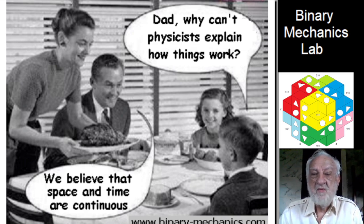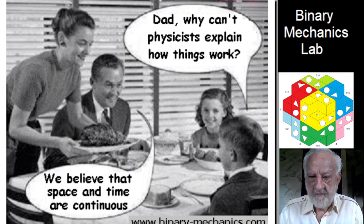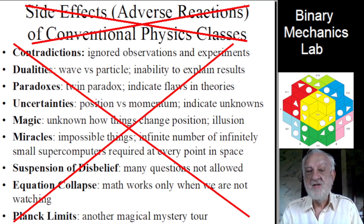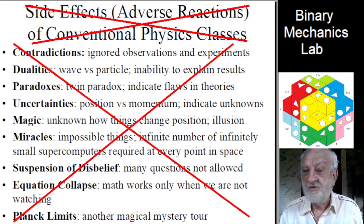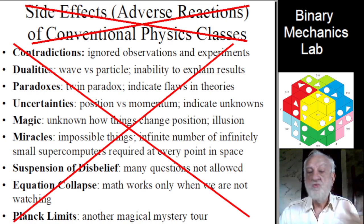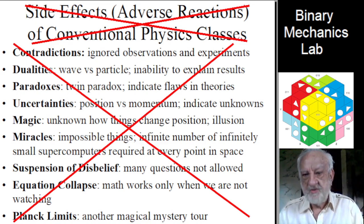Namely, without full quantization, not only is Major League progress in physics limited, in addition, such breakthrough progress is simply not possible. Whether or not I am correct on this key point, a very important consequence of full quantization is the absence of adverse side effects. In binary mechanics, there are no known contradictions, dualities, paradoxes, uncertainties, magic, miracles, and so forth.